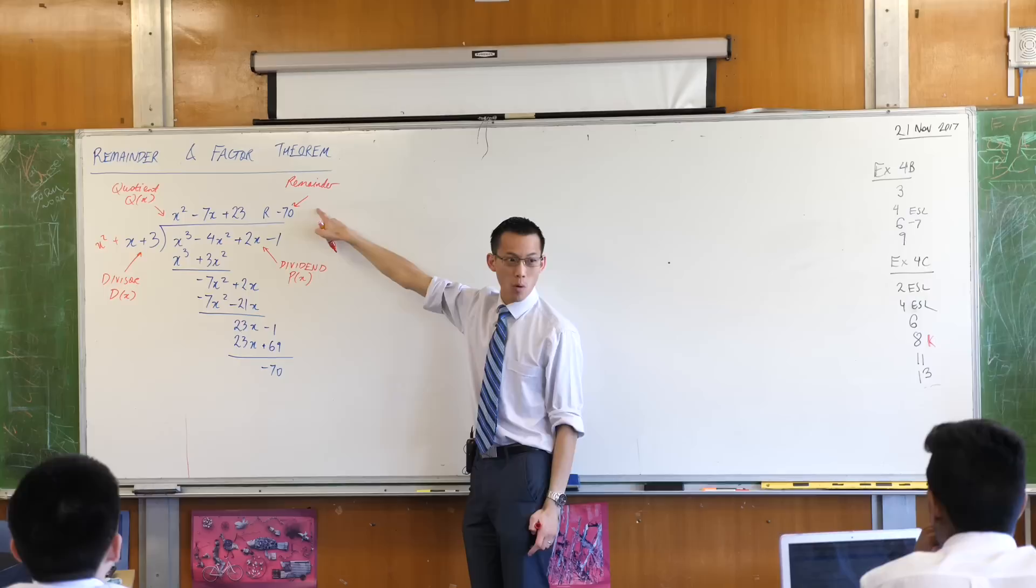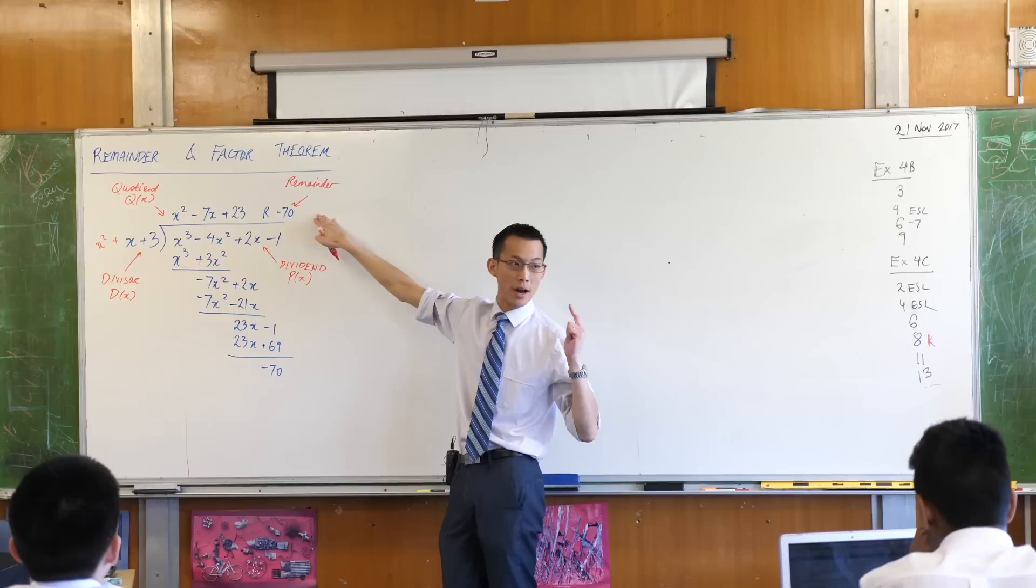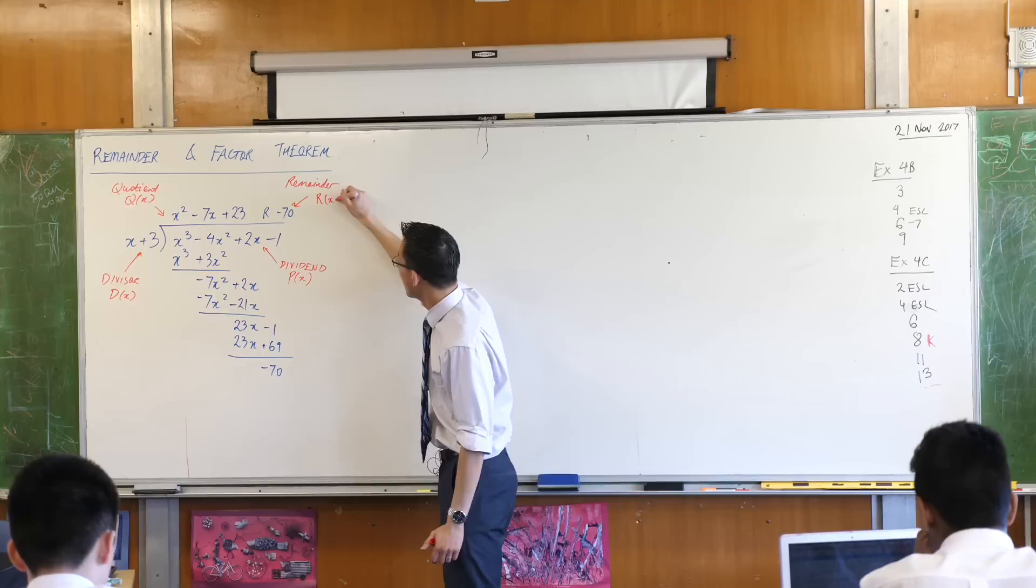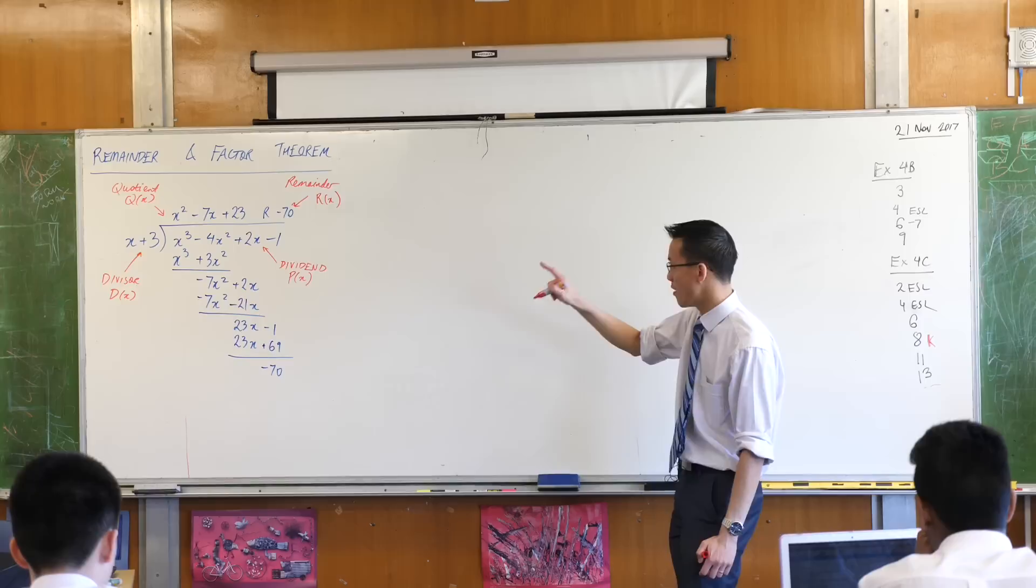What we saw was the degree here is going to be one more than the degree here. Or another way of saying it is that the degree of your remainder is always one less than the degree of your divisor. So therefore, this here, the remainder, is itself also a polynomial. In this case, it's just the constant polynomial.